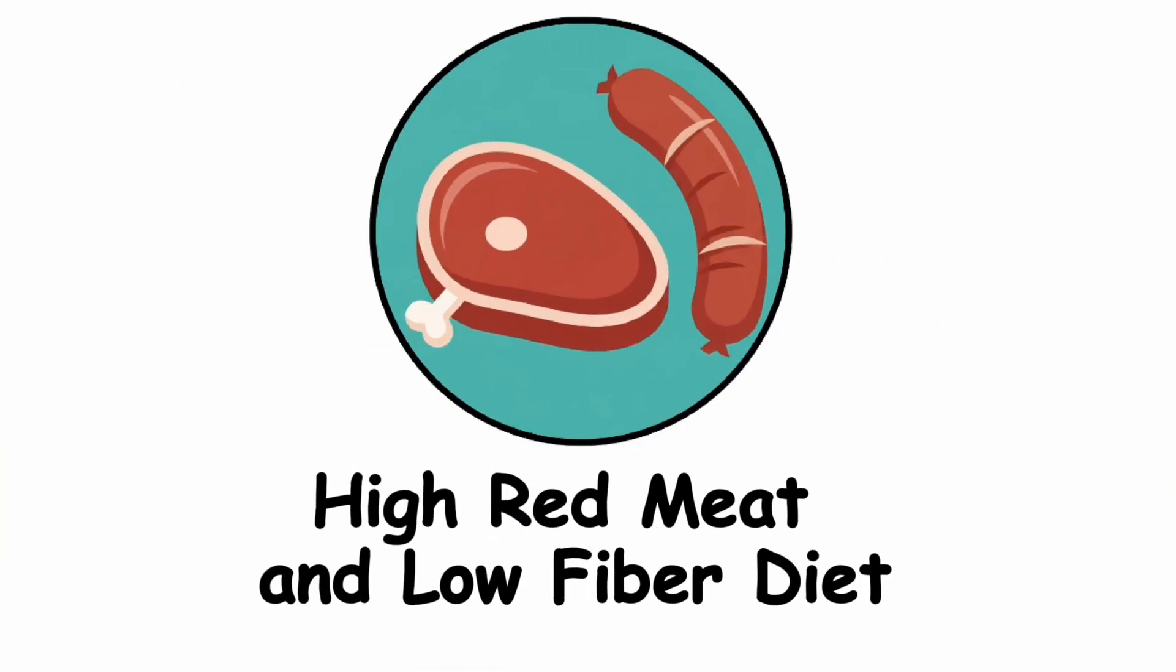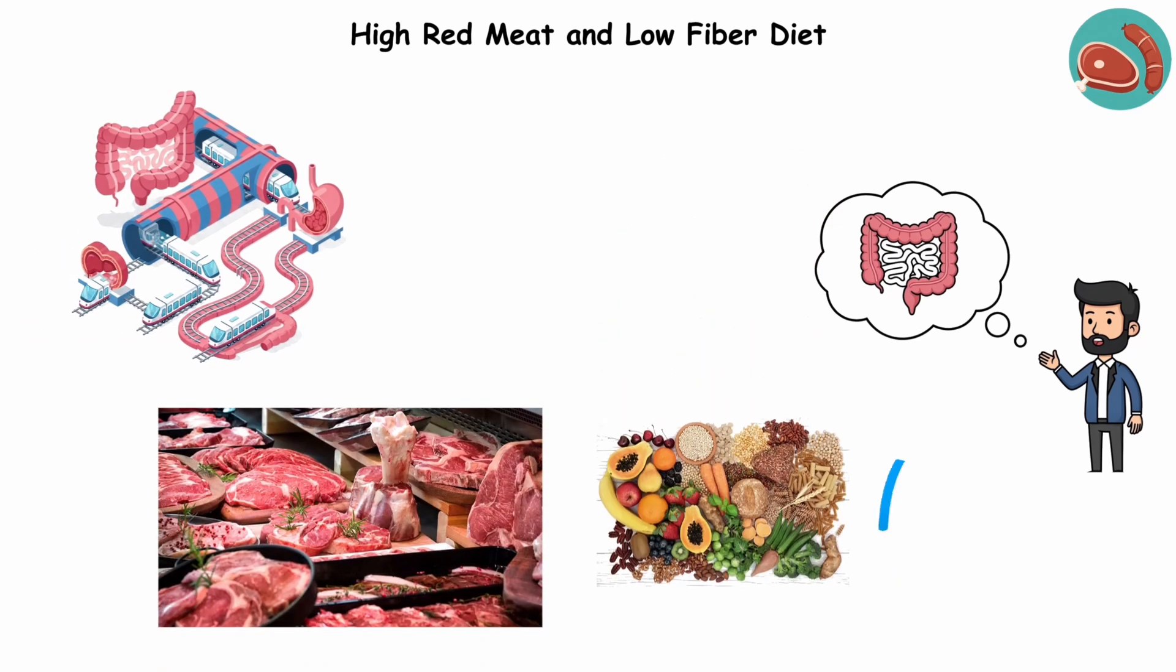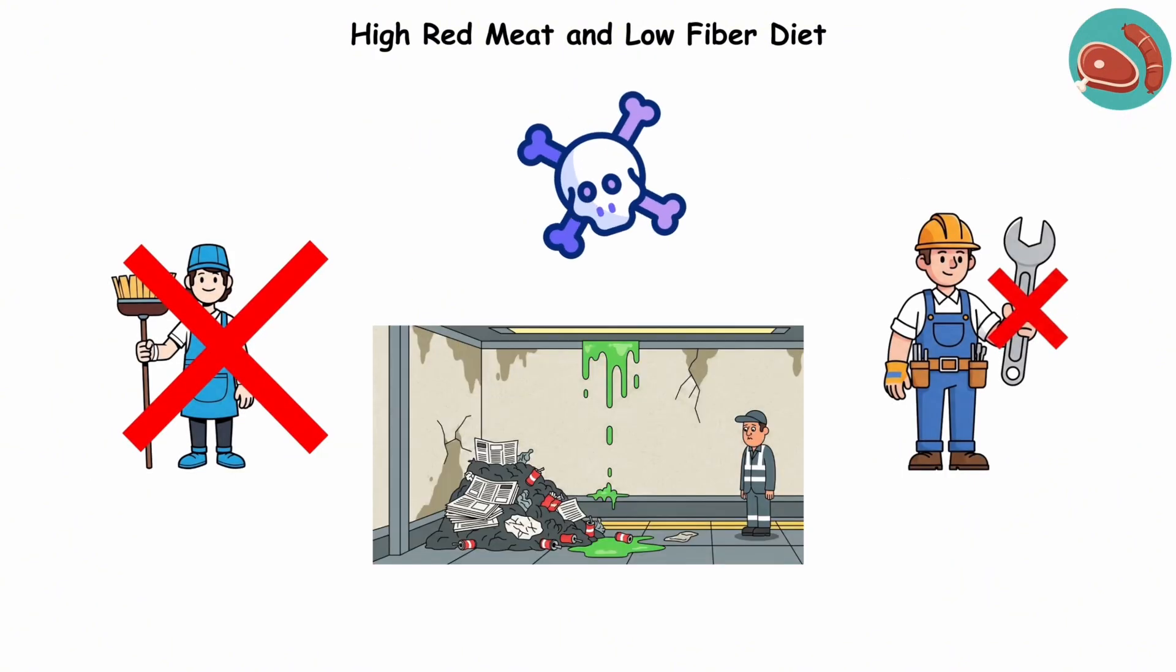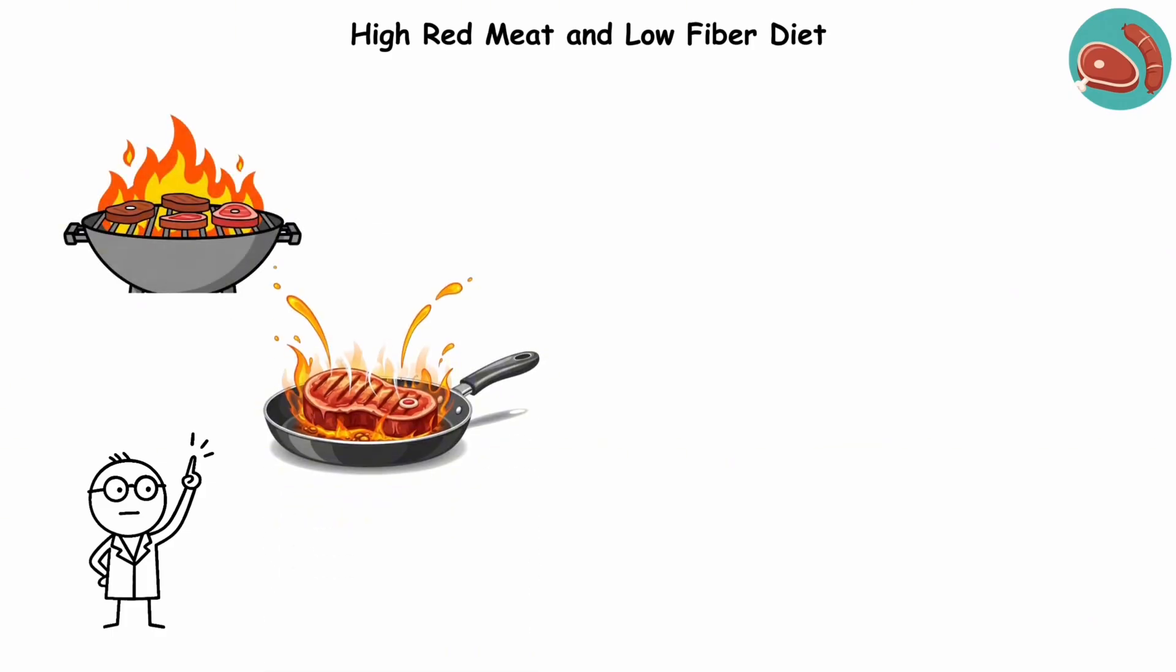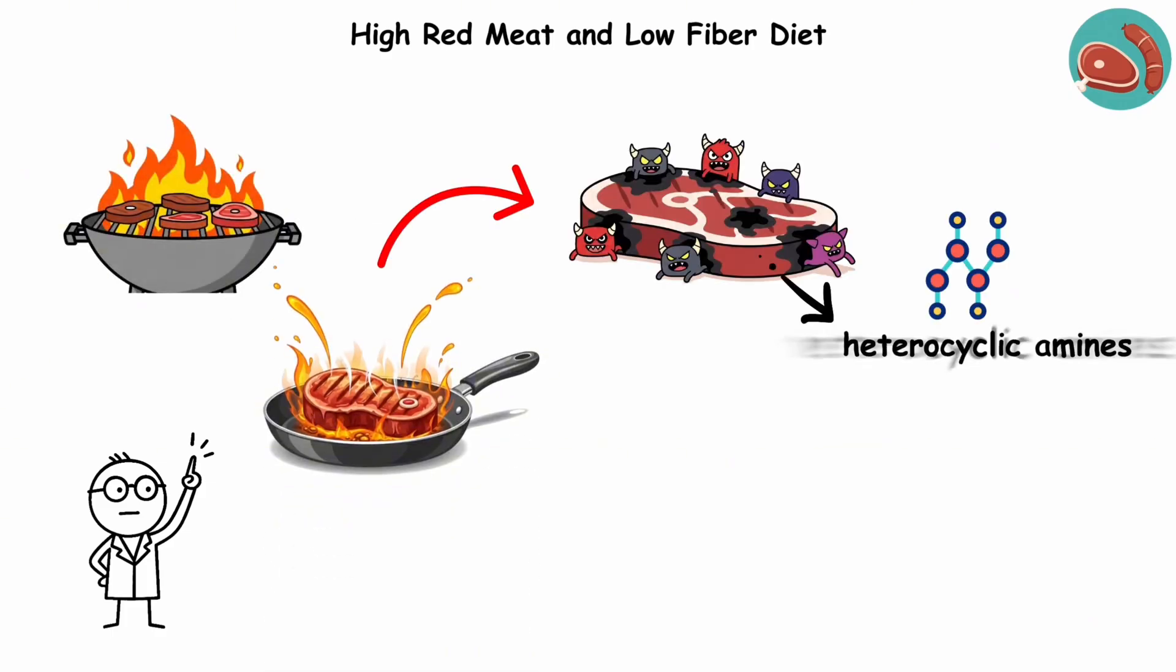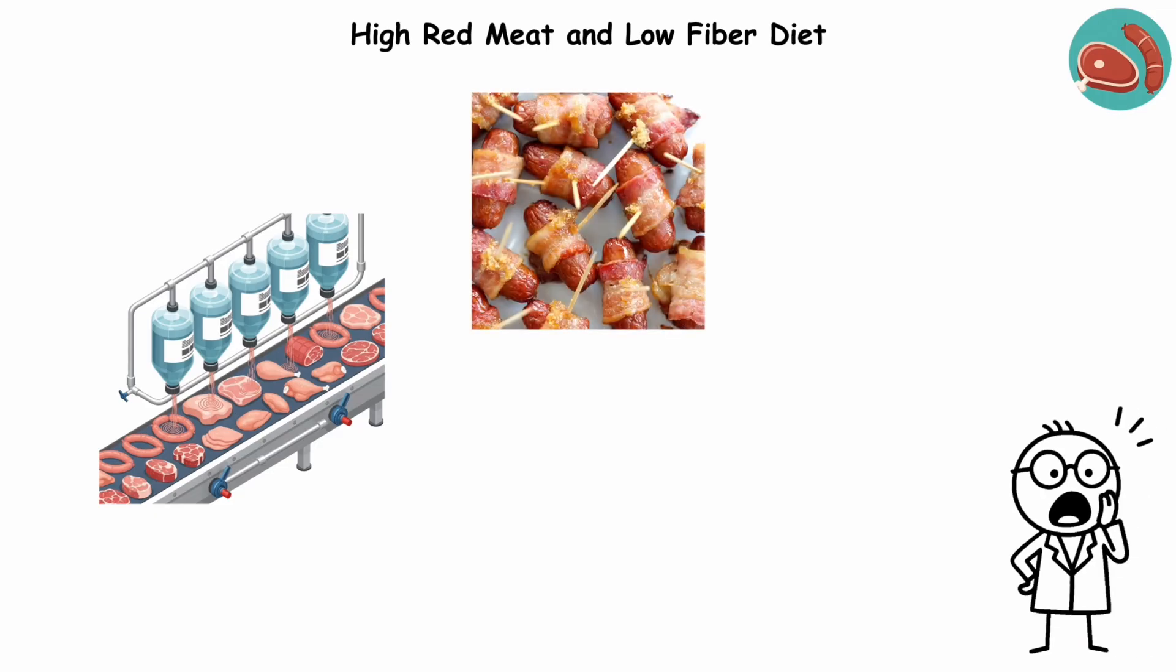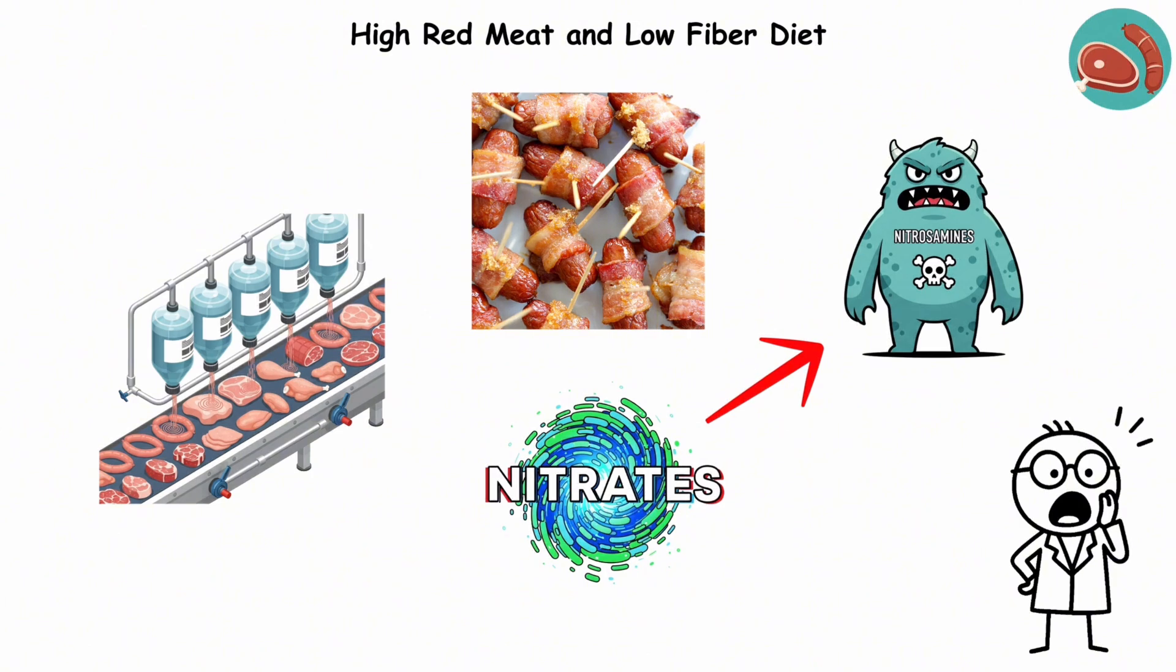High red meat and low-fiber diet. Imagine your gut as a busy subway station. When your diet is packed with red meat and low on fiber, that station gets chaotic. No cleaners, no maintenance, just a lot of toxic buildup. Here's what's going on. When red meat hits high heat, like grilling or frying, it creates nasty compounds called heterocyclic amines and polycyclic hydrocarbons. These can damage the DNA of cells lining your digestive tract. Processed meats, like bacon or sausages, add another twist. Preservatives, like nitrates, can morph into cancer-causing nitrosamines once inside your body.